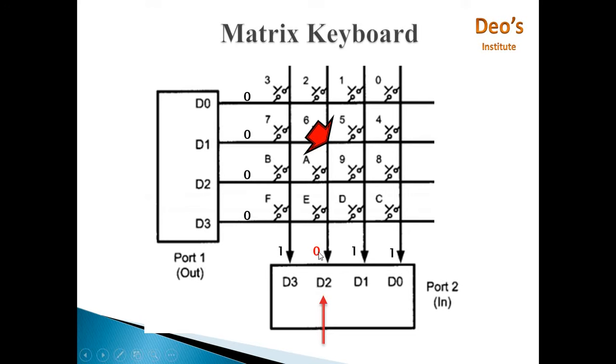As there is 0 on D2, we identify that any key on the D2 column is pressed, but we don't know whether it is 2, 6, A, or E.